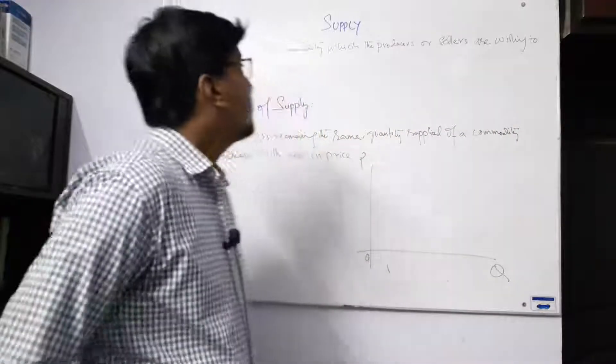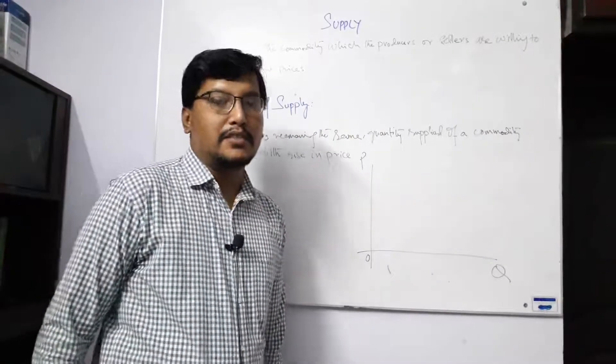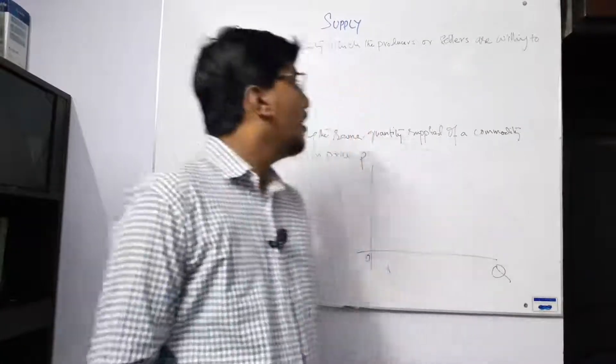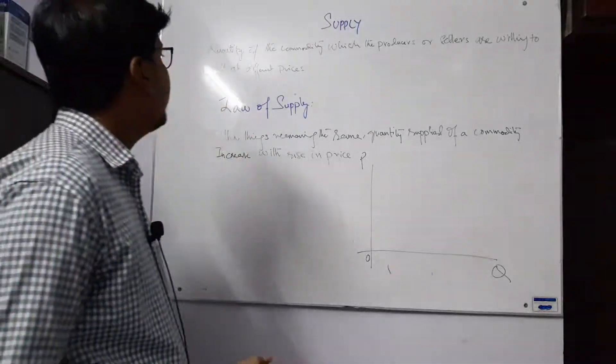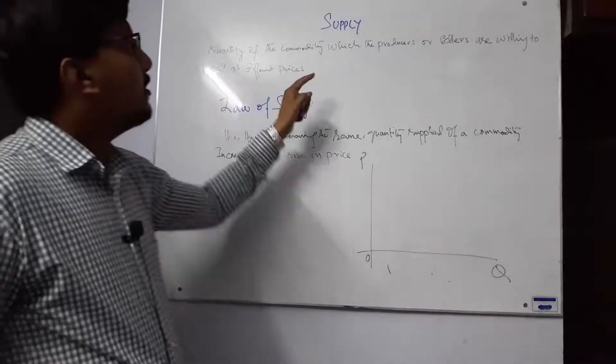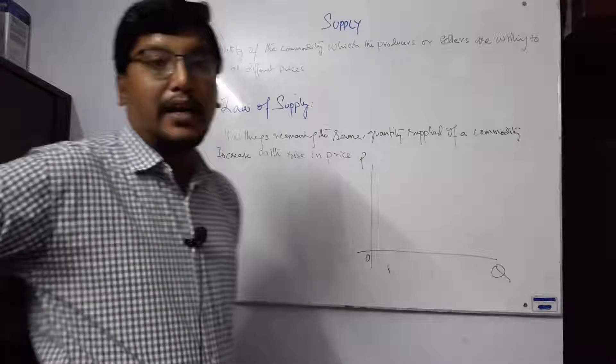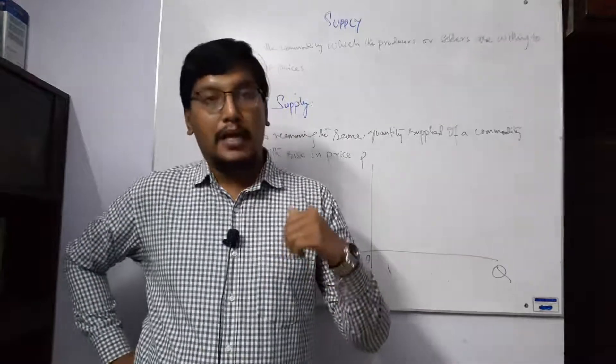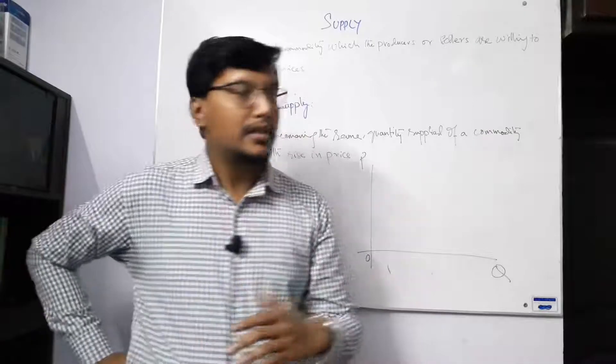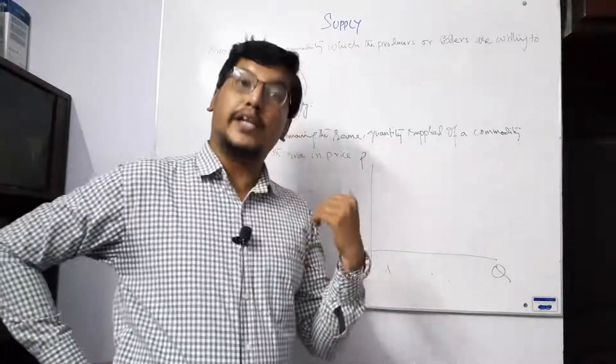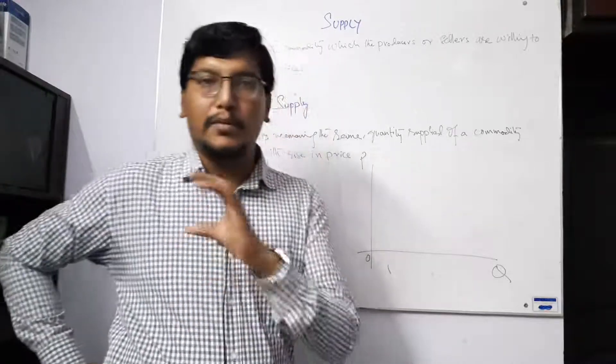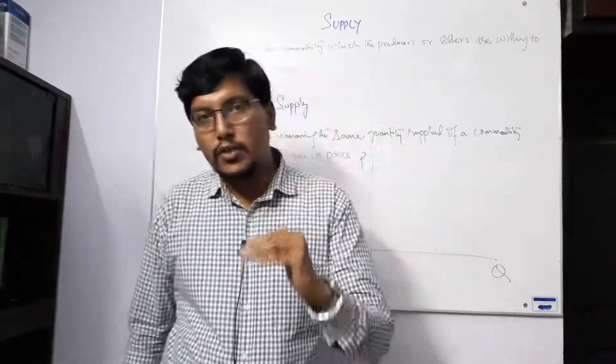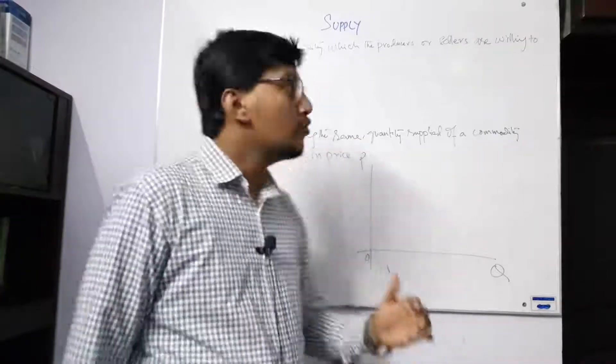We are here with a new topic, this is supply. We discussed in the last lecture about demand and law of demand. Demand and supply both are very basic and fundamental topics. So we discussed what is supply. Supply means the quantity of the commodity which the producer or seller is willing to sell at different prices. Just recall what was in demand - this means buyers are ready to buy at different prices. Here, producers are ready to sell at different prices. So first the agreement of the buyer and supplier is needed. When the supplier, producer, or seller is ready to sell some commodity or goods, that becomes supply.